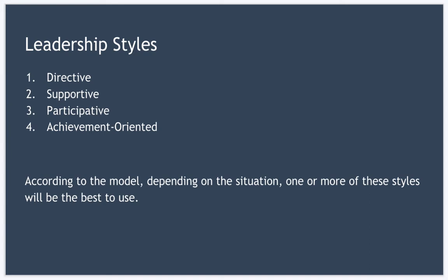So firstly, directive. Directive leaders tell their subordinates precisely what they want them to do, how they should do it, and the deadline for completing the task. The leader makes unambiguous rules and regulations which must be followed by the subordinate.